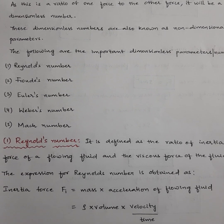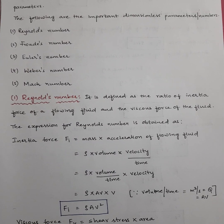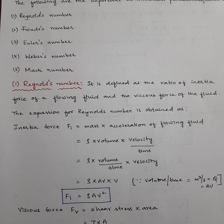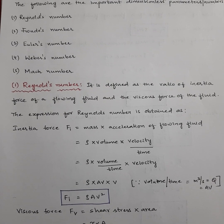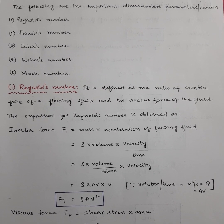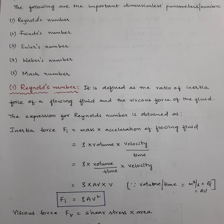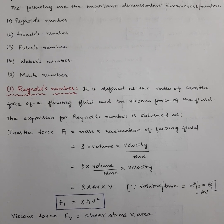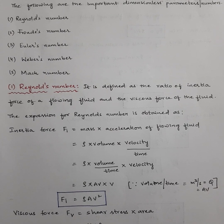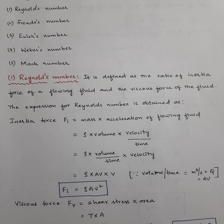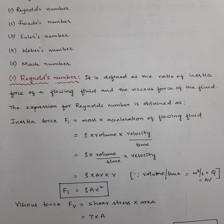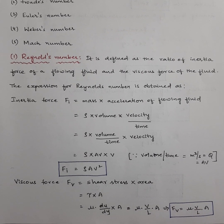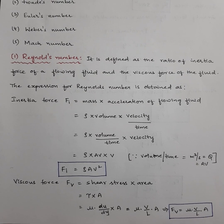Let us start with the first one, Reynolds number. Reynolds number is obtained by dividing inertia force by the viscous force of the flowing fluid. Reynolds number is the ratio of inertia force to viscous force. The formula for Reynolds number is ρVd/μ when dynamic viscosity is given. When kinematic viscosity is given, Reynolds number is Vd/ν.